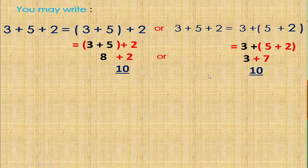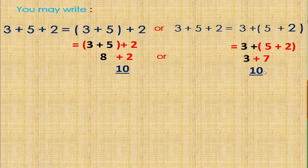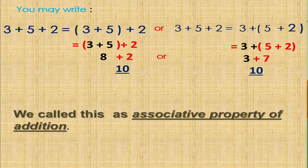Or we can do this in another way. So 3 plus 5 plus 2 — we can group first 5 plus 2. So 5 plus 2 is equal to 7. Then we add 3: 3 plus 7 is equal to 10. Mga bata, ano kayang tawag natin dito? Ang tawag natin dito ay Associative Property of Addition.